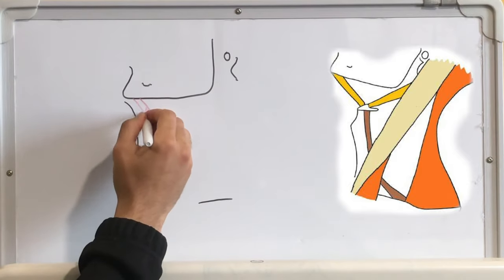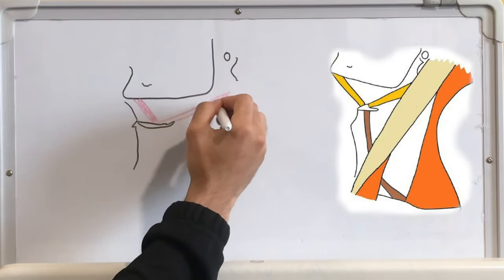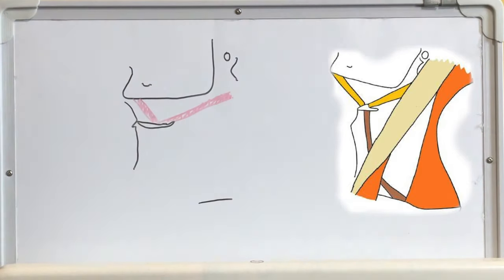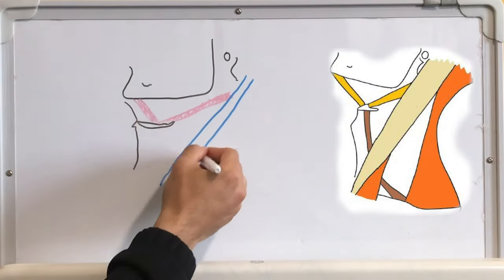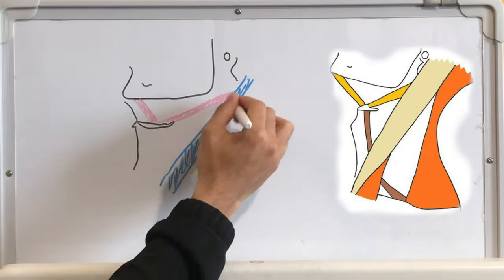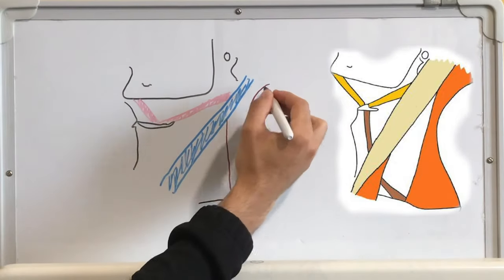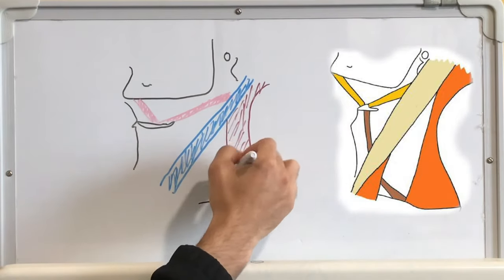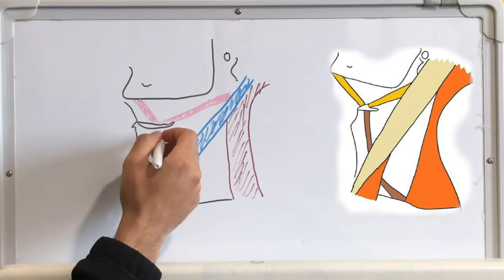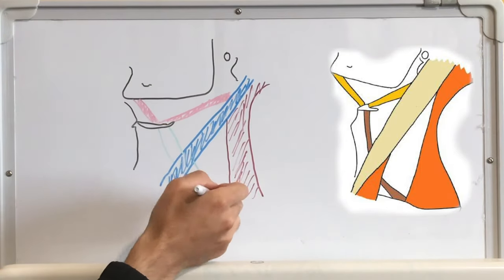Followed by the muscles: number one the anterior and posterior belly of the digastric, the sternomastoid muscle, the trapezius muscle, followed by the omohyoid muscle, the superior belly and the inferior belly.